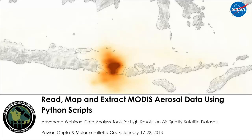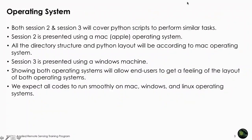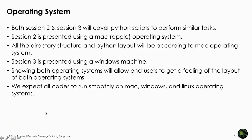We'll go over some sections of the code where you can modify things to perform different tasks, change the parameters, or change other variables. I hope everybody was able to install Python. If you can see, I'm on slide number three. In both this session and session number three, we will cover Python scripts to perform similar tasks.